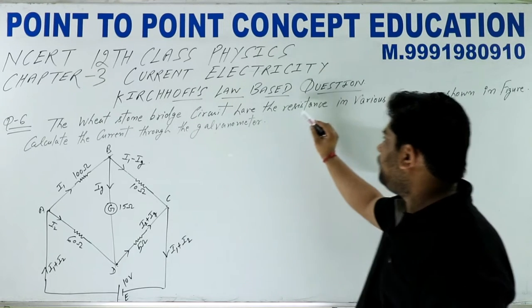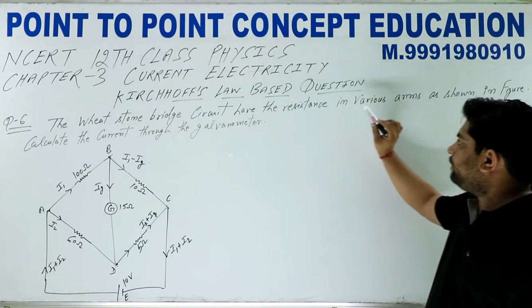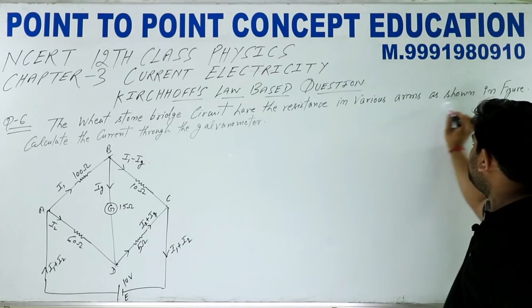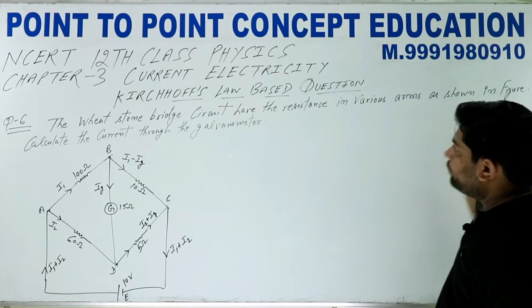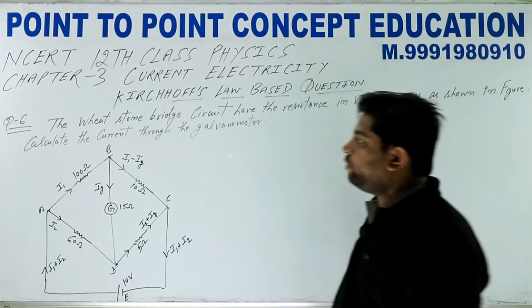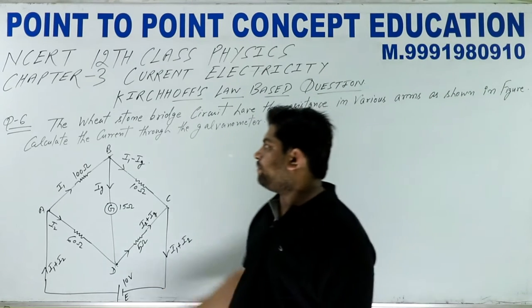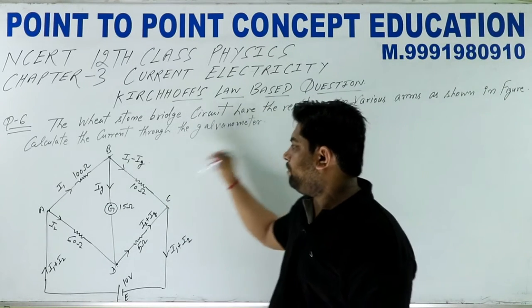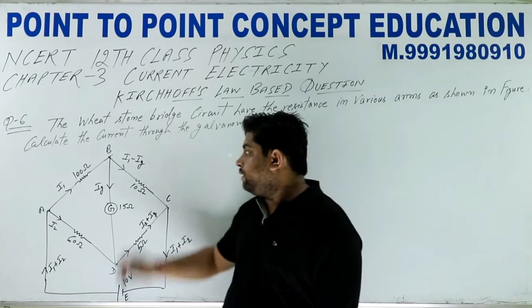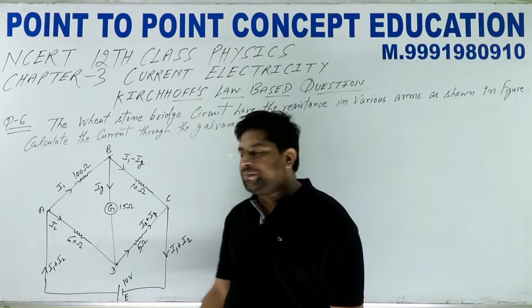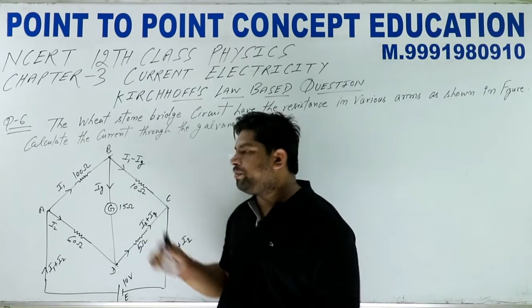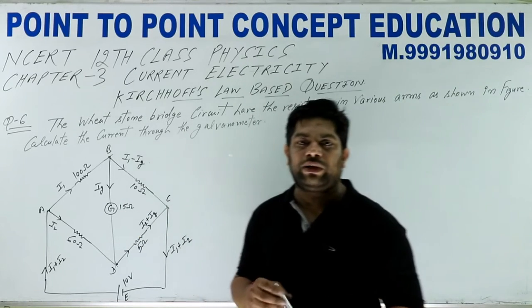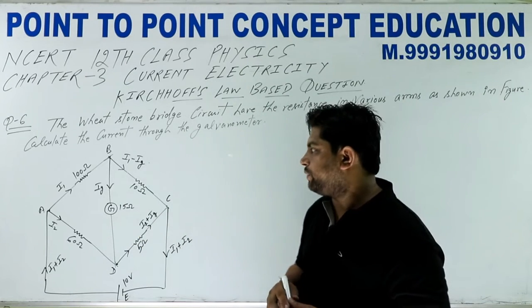The Wheatstone bridge circuit has resistances in various arms as shown in the diagram. Calculate the current through the galvanometer. यह circuit दिया हुआ है, galvanometer में से कितना current flow कर रहा है, यह हमें find out करना है।